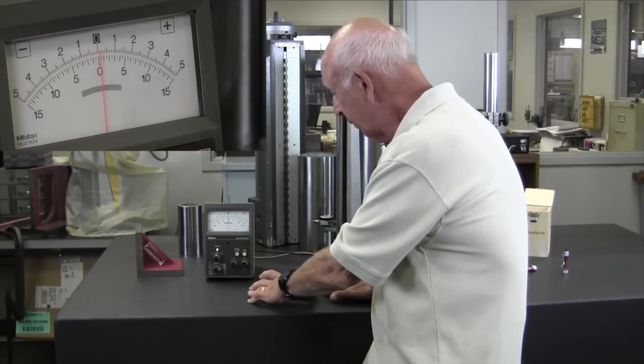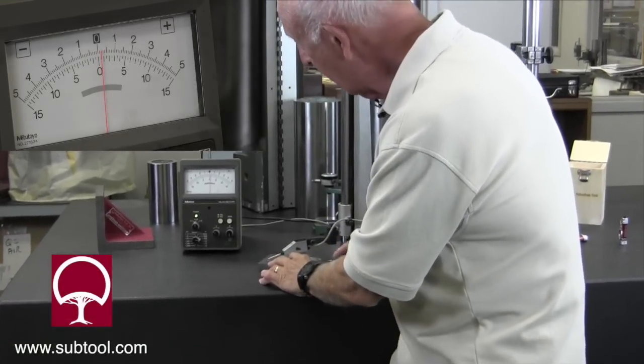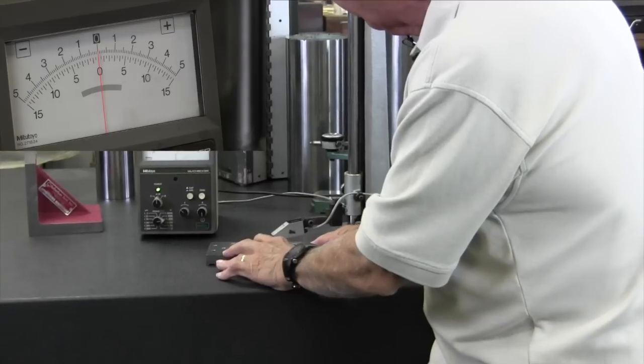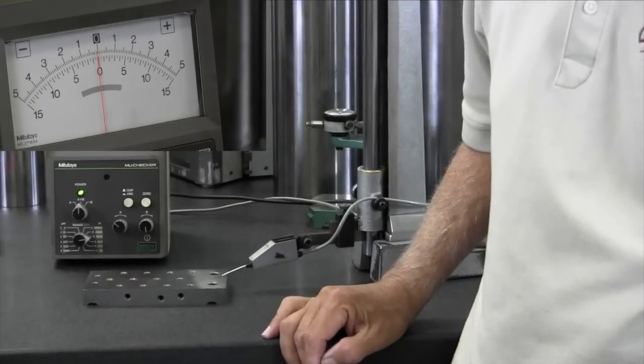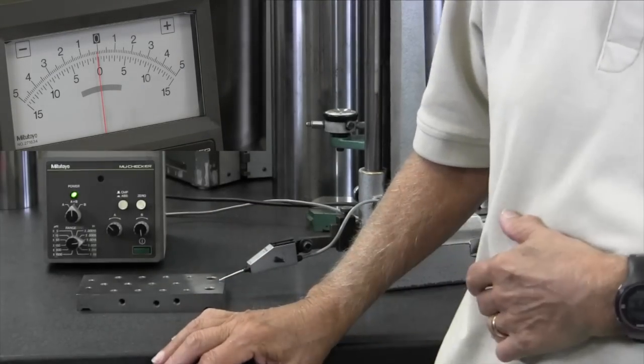Now we're going to check it for parallelism and we've got our indicator set at zero and we're going to walk it across. And as we come across here, we can see it's within about a tenth or so. So we know that this part is now flat and parallel.